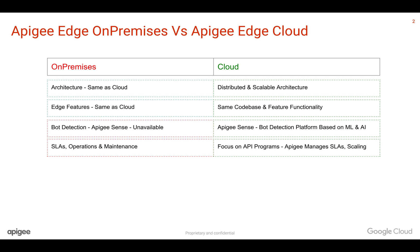In cloud, Apigee manages the SLAs and auto-scales your APIs — you just focus on building API programs. Apigee commits 99.99% SLA on paper, and in reality it is much more than that when it comes to running your APIs on Apigee Edge Cloud.